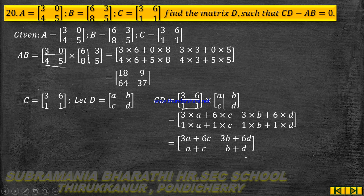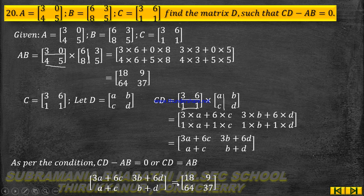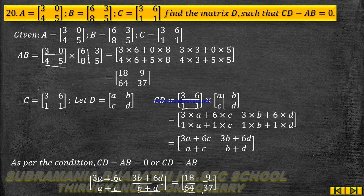Given that CD minus AB equal to 0, we get CD equal to AB. So equating the elements of CD and AB: 3a plus 6c equals 18, 3b plus 6d equals 9, a plus c equals 64, b plus d equals 37. Now solve these equations.